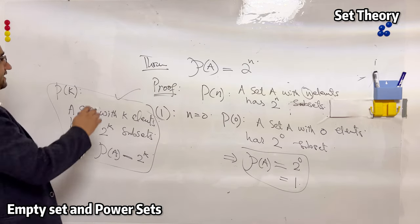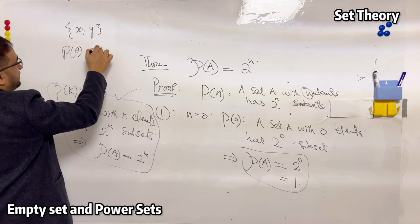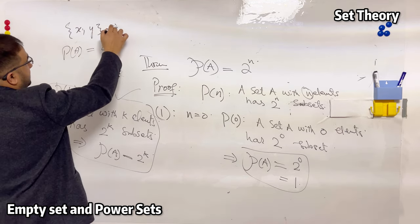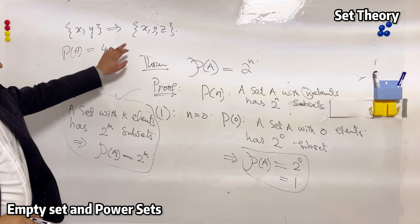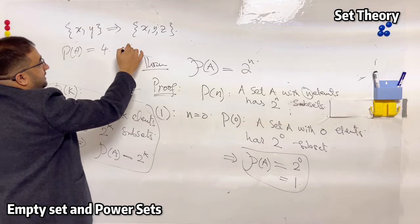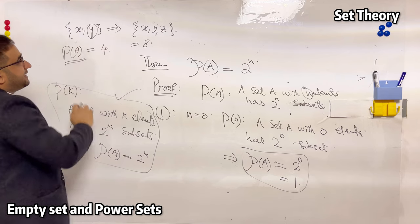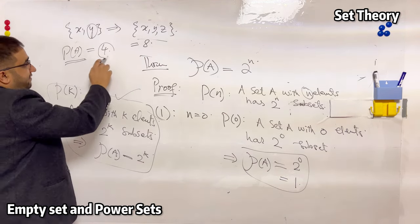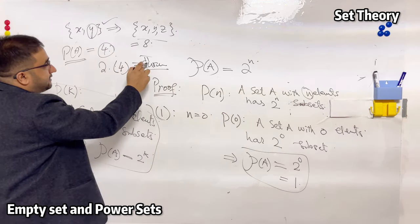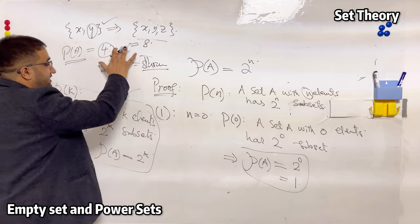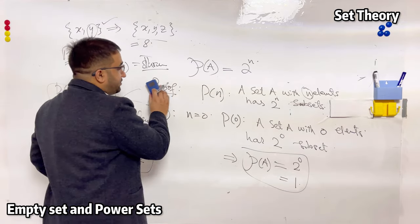Recall that when you increase one element in a set — for example from {x, y} to {x, y, z} — the number of power sets doubles, from 4 to 8. So when you add one element, the number of subsets becomes two times that of the previous set. Using this observation and the gift P(k), we need to show P(k+1) is true.